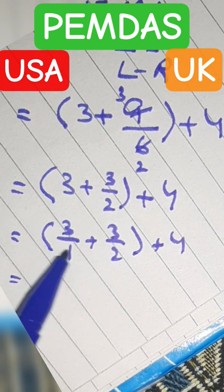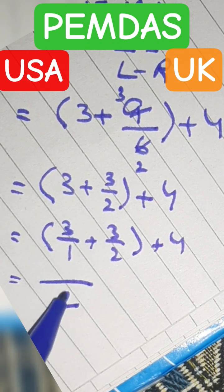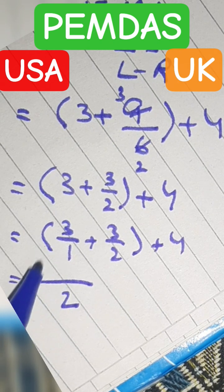First we get LCM, and LCM is two. Two divided two is one, is two and two is six.